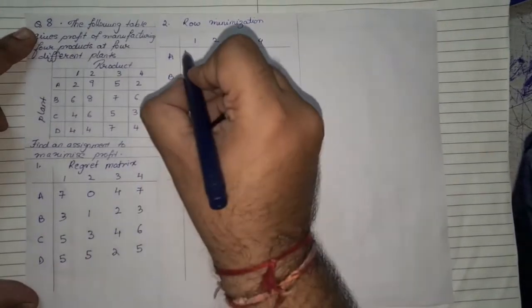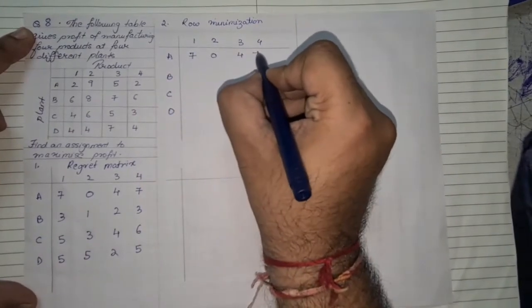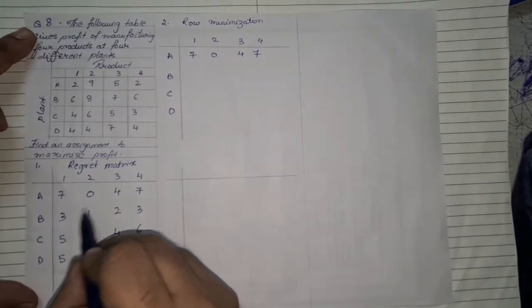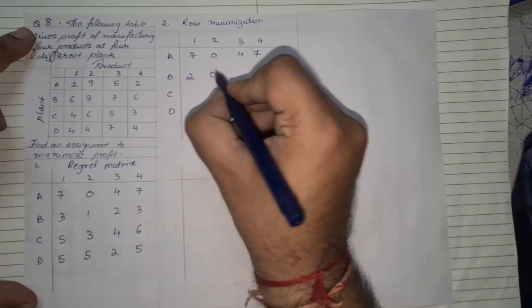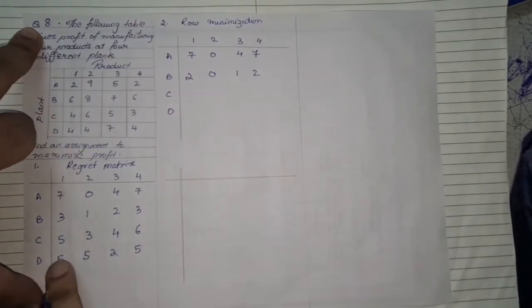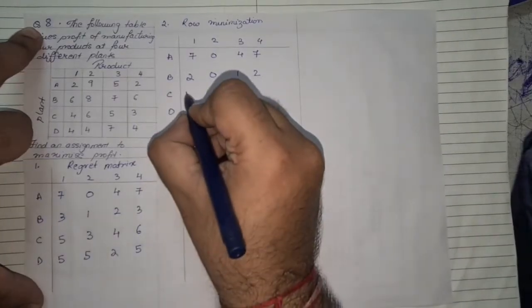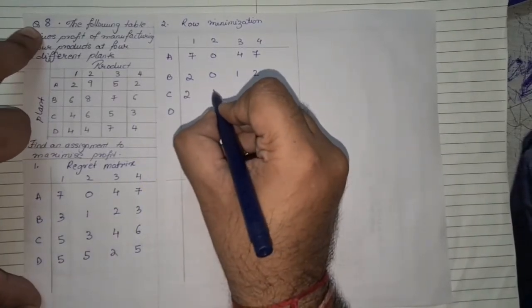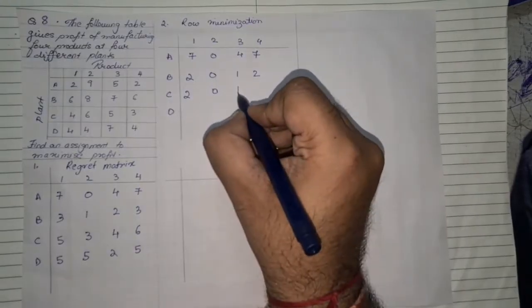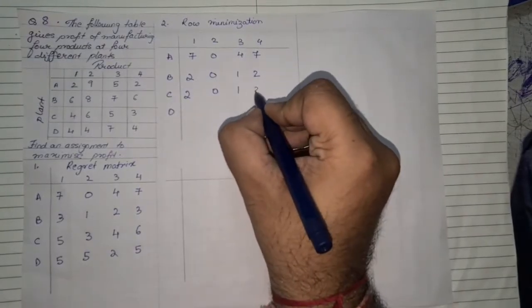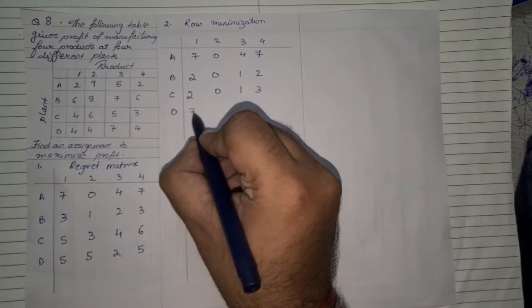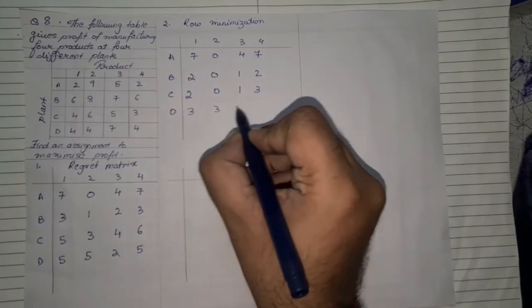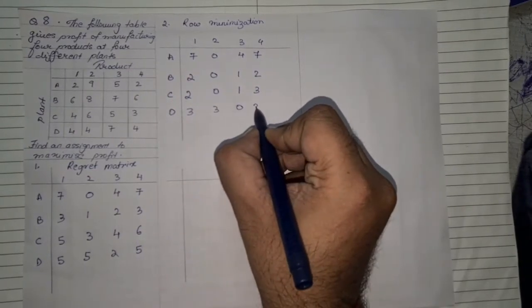In the first row zero is the lowest value so zero minus all other values will give you the same value. Next maybe we have one as the lowest value so it will be two minus one three minus one which is two zero one and two. Next the lowest value is three so I will have two zero one and another three.